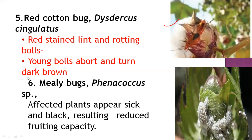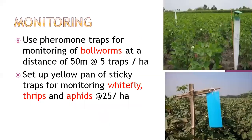Mealybugs are also a very severe pest, appearing as a cottony growth on plants. This plant-sucking insect makes the whole plant appear sick, and when the population is severe it reduces fruiting capacity, meaning boll formation is totally affected.